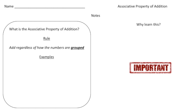Hey everybody, Dr. Nelson here. This is a video about the associative property. For the first few pages you're going to take notes with me, and then you have a chance to pause the video and try some problems on your own, and at the end you can see how you did. So what exactly do we mean by the associative property? Under the word associative, I want you to write the word 'group.' This property is all about regrouping numbers.